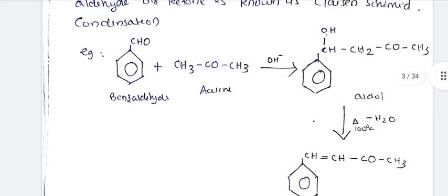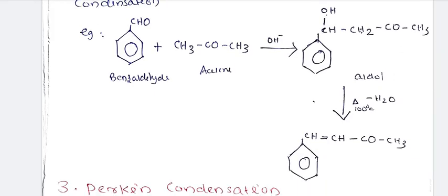For an example of Claisen-Schmidt condensation: we have an aromatic aldehyde and CH₃COCH₃ (acetone) as the ketone. The carbonyl double bond O shifts to single bond O-H (enol form), forming a negative charge. The enolate attacks. Then thermal dehydration eliminates H₂O molecules to complete the reaction.